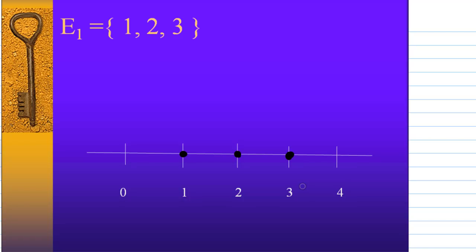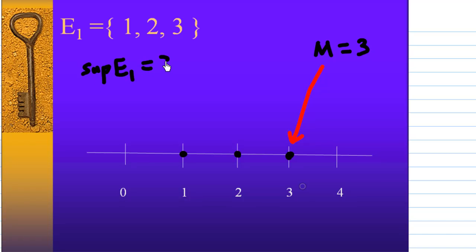What is the least upper bound or supremum of E1? The least upper bound of E1 is 3. 3 is greater than every element in E1, and you cannot lower it down, because once you lower the number 3, it is no longer an upper bound of E1. Notice that M is equal to 3, so the supremum of E1 is 3, and it also lies in E1.